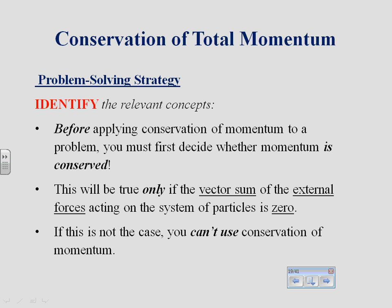For conservation of momentum problems, the first thing you have to decide is whether or not momentum is actually conserved. Momentum is conserved only if the net external force acting on the system is zero. For collisions, as long as the forces between the colliding objects are much larger than any external forces, and we're looking at a very short time frame, we can also apply conservation of momentum. If you don't have the net external force being zero, you cannot use conservation of momentum.